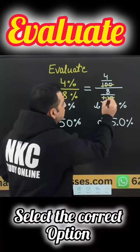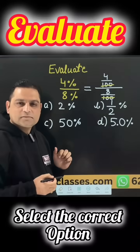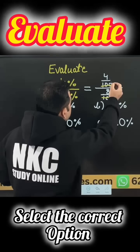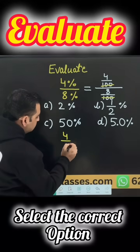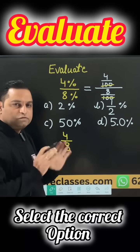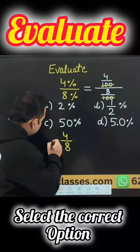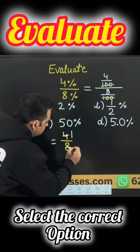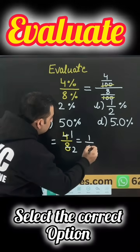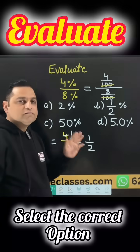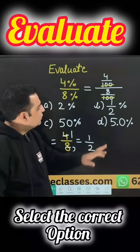The 100 and 100 are going to be cancelled, and what are we left with? We are left with only 4 over 8. I am writing here, we are left with only 4 over 8. And when you continue doing this question further, we get 1 over 2. Looking at 1 over 2, many people think that option b